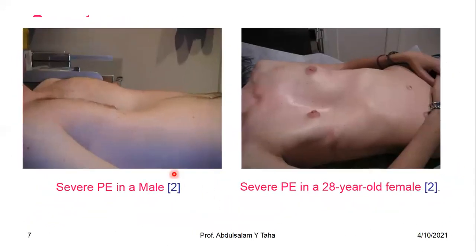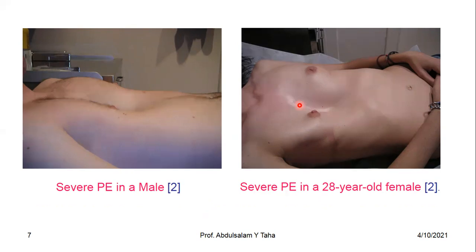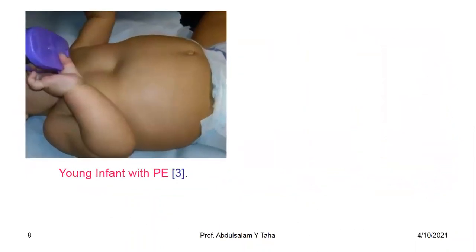This is an example of a male patient with severe Pectus Excavatum deformity, and this is an example of a female 28-year-old with severe Pectus Excavatum deformity. The deformity can be symmetric or asymmetric, and can sometimes be associated with Pectus Carinatum. This is also an example of a young infant with Pectus Excavatum.